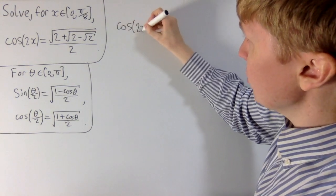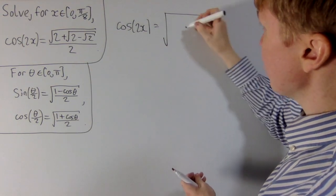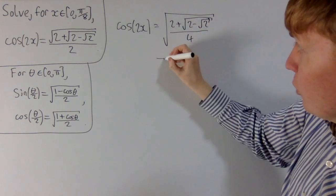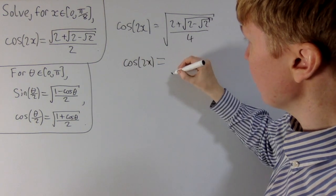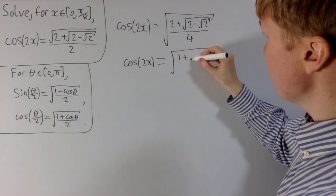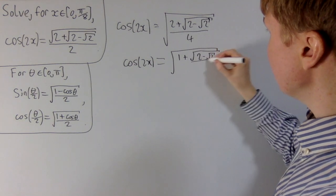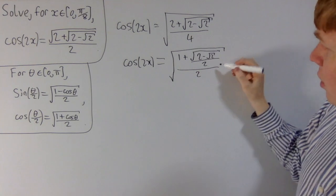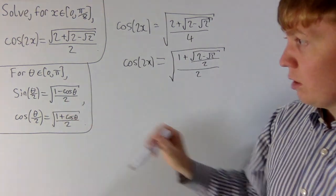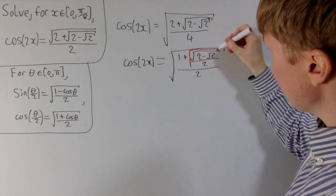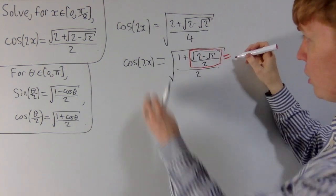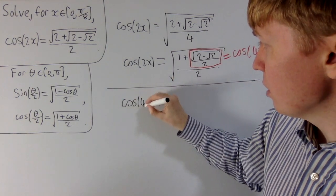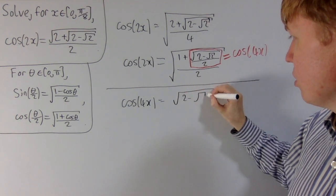Starting just like before, we'll write cos 2x and take the 2 in the denominator inside our square root, keeping 2 plus root 2 minus root 2, now all divided by 4. Dividing the top and bottom of the fraction by 2, we get cos 2x equals 1 plus the square root of 2 minus root 2, all divided by 2, then all divided by 2. Using the half-angle formula for cosine, if 2x is our theta over 2, then the square root of 2 minus root 2 over 2 matches cos theta. Doubling the angle, cos of 4x equals this expression.